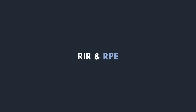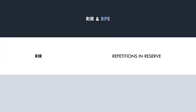First let's explain what exactly these concepts are. RIR is an acronym for reps in reserve and RPE is an acronym for rate of perceived exertion. These concepts both use numerical scales to quantify proximity to failure, or how close a set was taken before failure. Both scales are essentially the same concept, although they use opposite values, making them interchangeable in resistance training — trainees can use whichever they prefer.